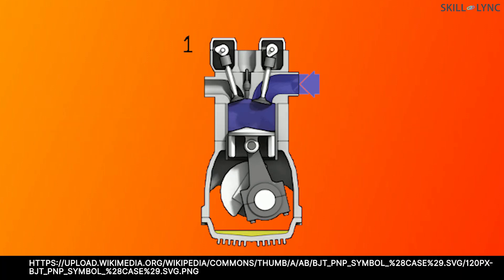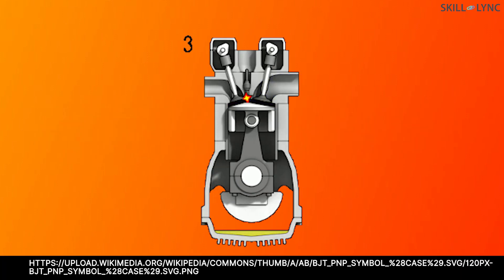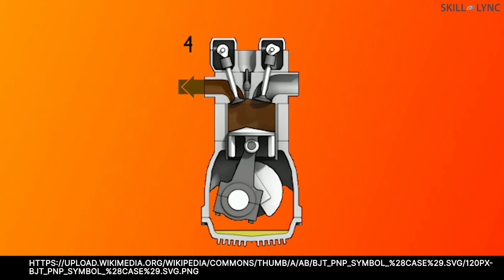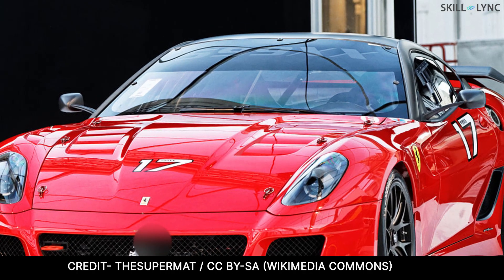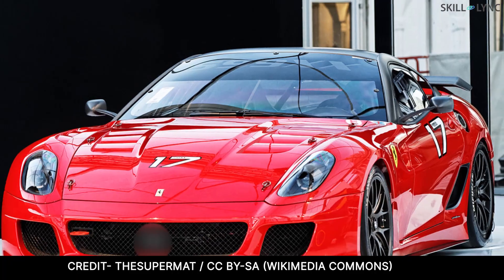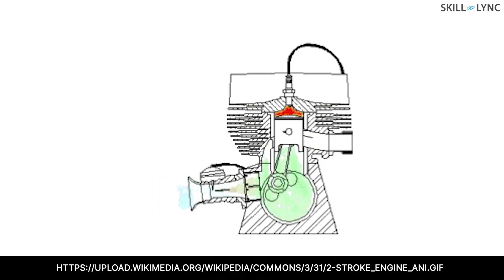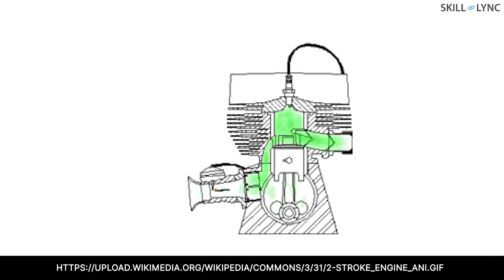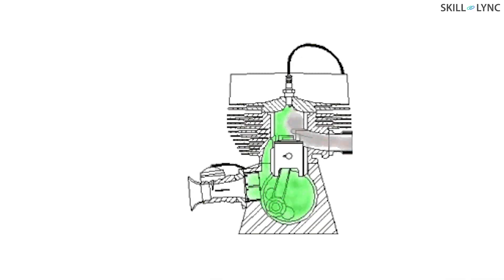In four-stroke engines, the engine operation takes place in four strokes: suction, compression, power, and exhaust. These engines are widely used in cars, buses, trucks, etc. On the other hand, a two-stroke engine carries out the entire operation in only two strokes — compression stroke and expansion stroke. These engines are used mostly in railway engines nowadays.